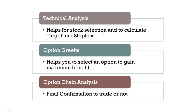If you do this, you can select a stock and a target. Using Option Greeks, you can select maximum benefit. If you combine Technical Analysis and Option Greeks but don't do Option Chain Analysis, you don't want to do any trading. That's why Option Chain Analysis is also required. This is what I covered in the last video.